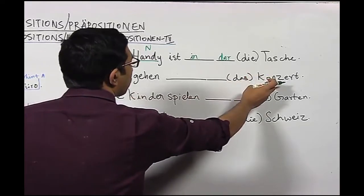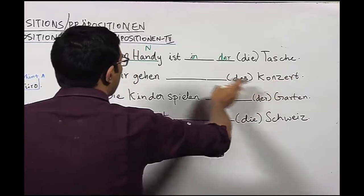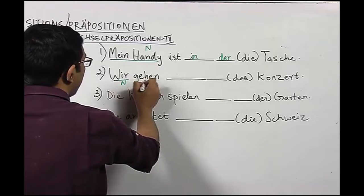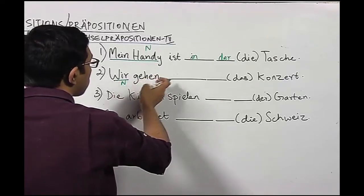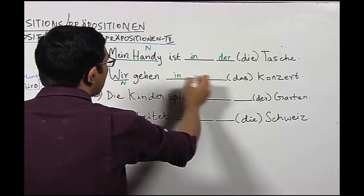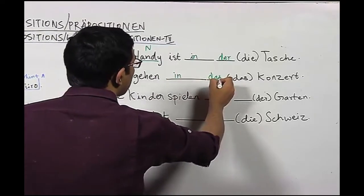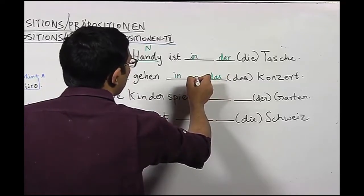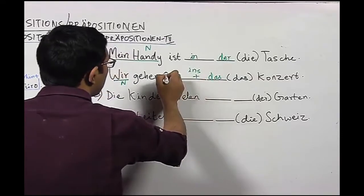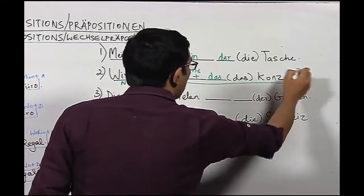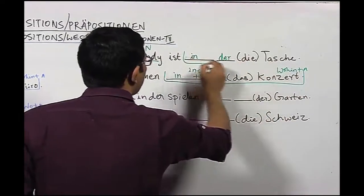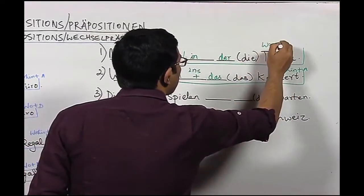Sentence number two: Er geht ins Konzert. The nominative is 'er', and the verb 'gehen' is an accusative verb because it shows movement. We use 'in' in accusative form: 'in das Konzert', or using the contraction, 'ins Konzert'. With this we get the wohin question answered in accusative; the previous sentence gave us the wo question in dative.